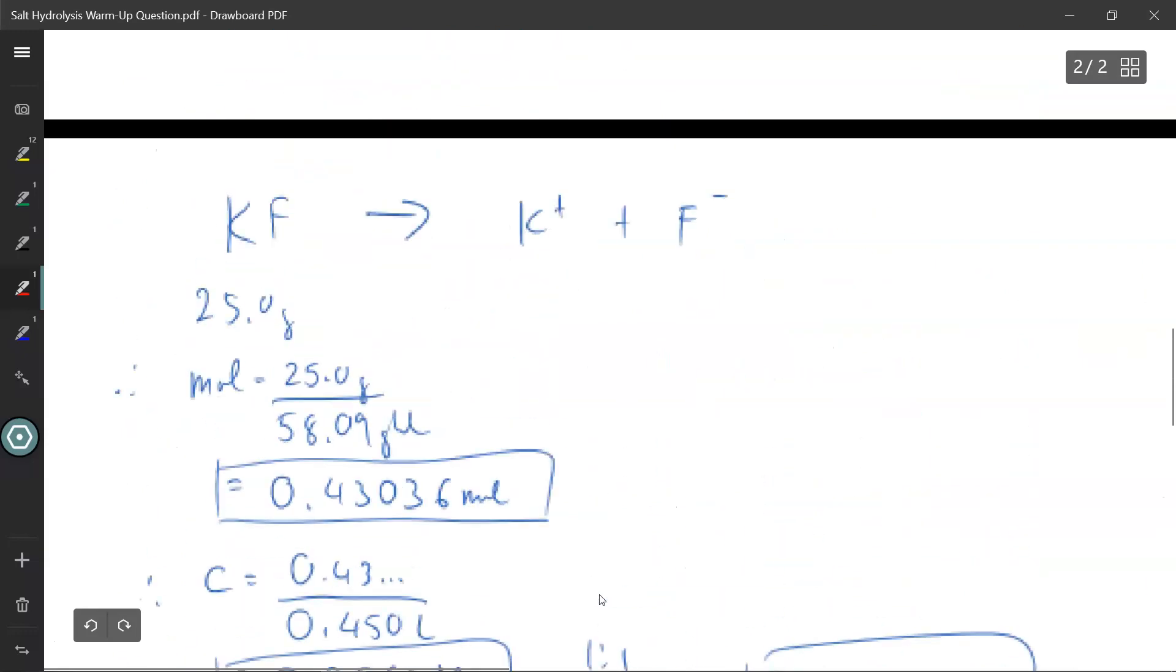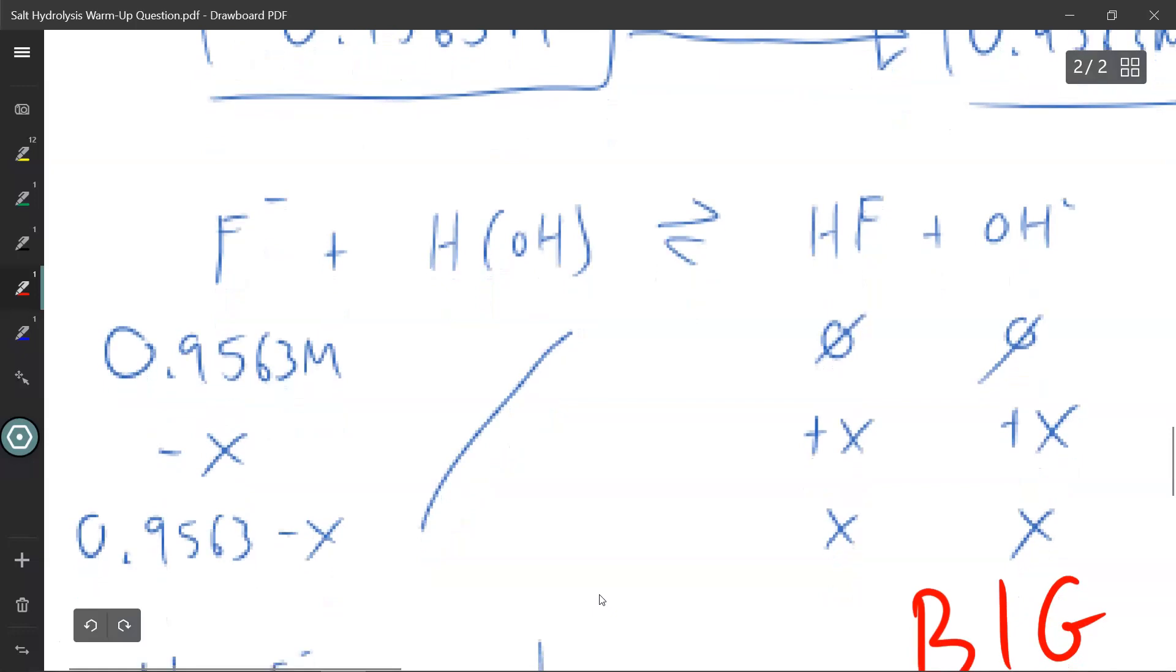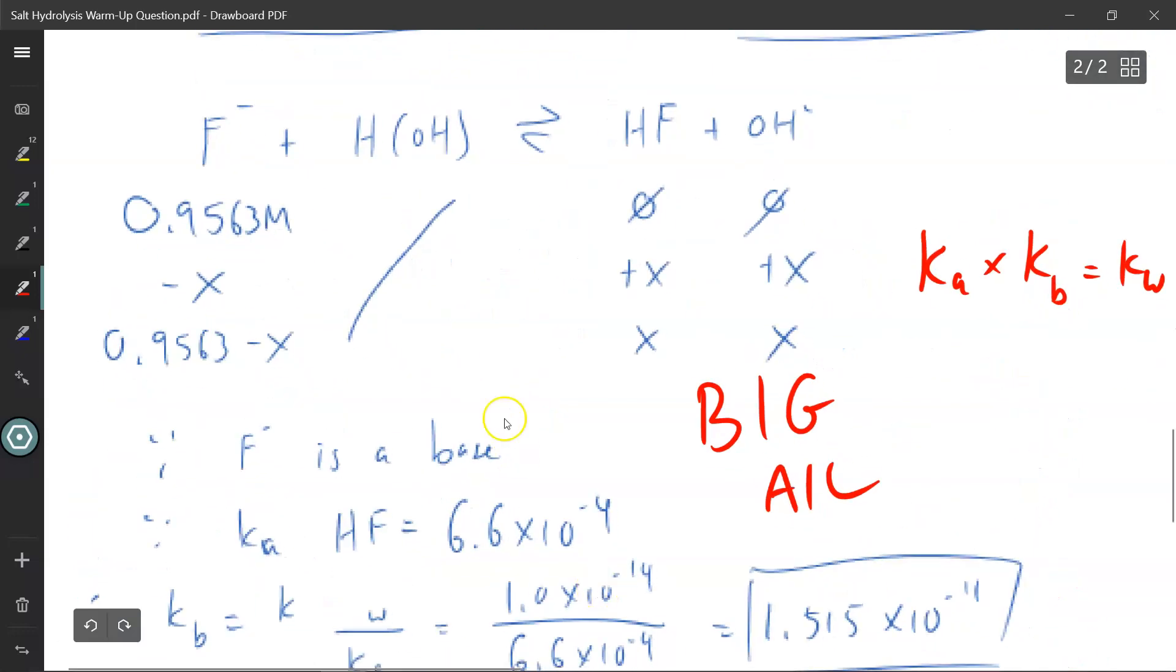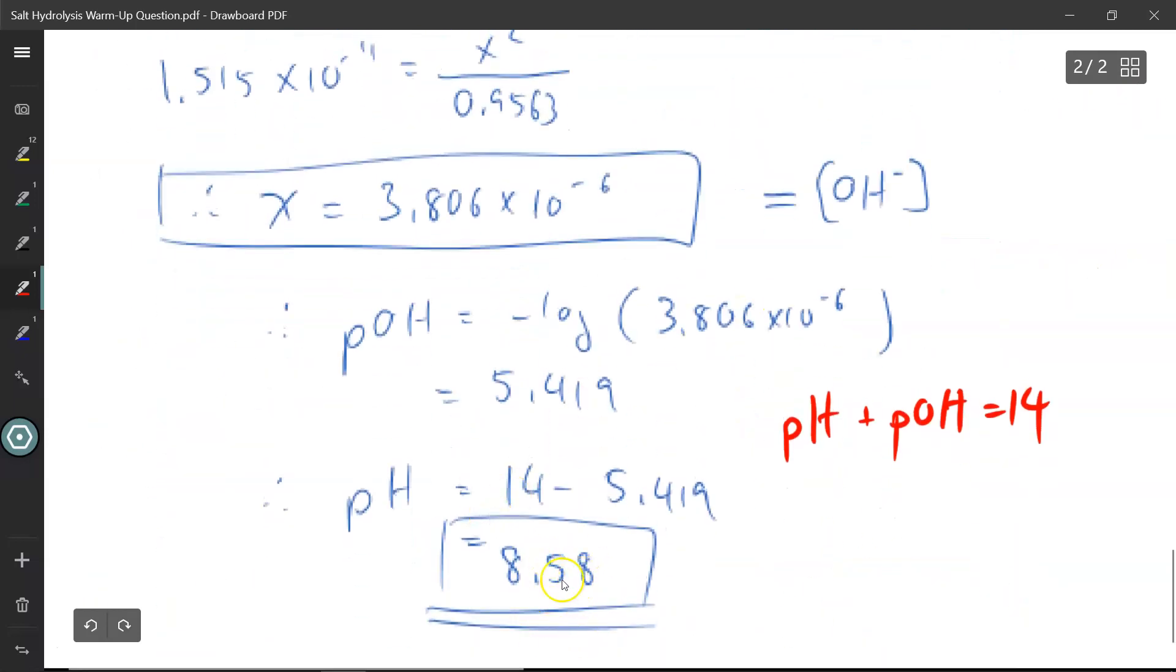And therefore my final pH is 8.58. Alright, so by adding in a salt and having the salt react with water through salt hydrolysis, I have caused the water to release hydroxide ions, allowing me to affect my pH, which is now basic, 8.58.